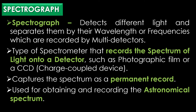The spectrograph is a scientific instrument that detects different light and separates them by their wavelength or frequency, which are recorded by multiple detectors. A spectrograph is a type of spectrometer that records the spectrum of light onto a detector such as photographic film or a charged-coupled device.